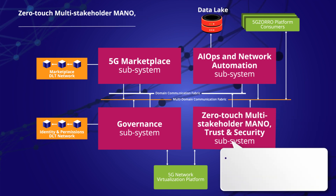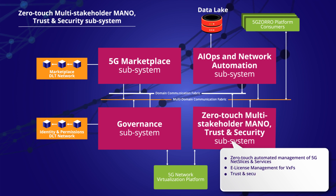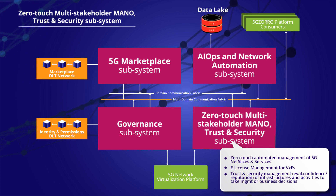In the 5G Zorro platform, the multi-stakeholder MANO trust and security subsystem provides a set of automated services that guarantee the trust and security among the parties involved in a business relationship, providing autonomous and decentralized solutions for trust management and security for multi-domain network slicing and multi-tenancy.